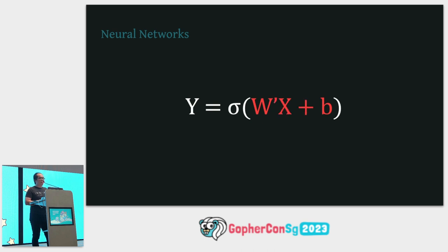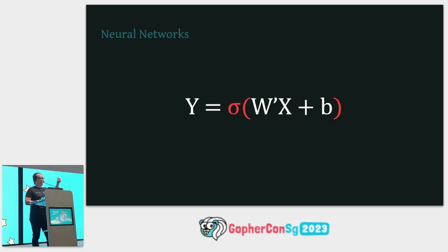A neural network is made of a linear transformation followed by an application of a function — usually some sort of non-linearity. X, W, and B are number-like things that must support operations like multiplication and addition, so we have to encode our raw inputs into number-like things before passing them to the function. If we adjust W and B, the function changes, and we change it until it does what we want — this is called training.